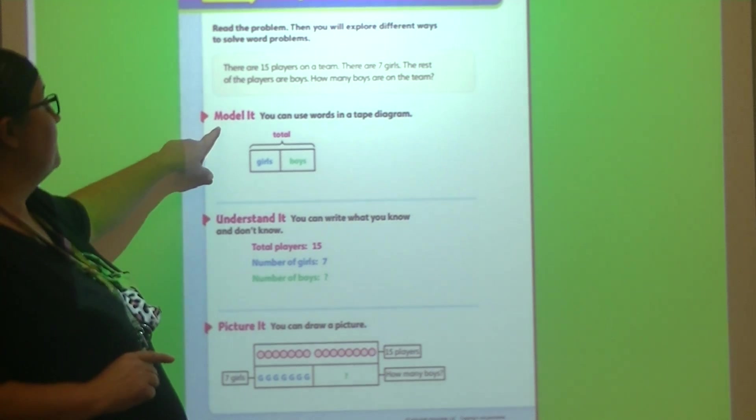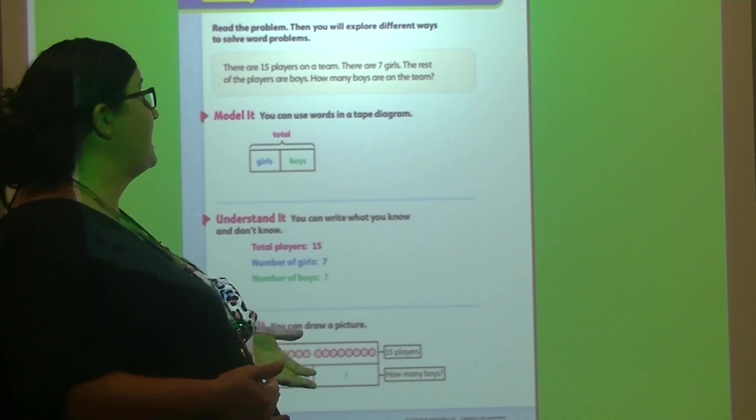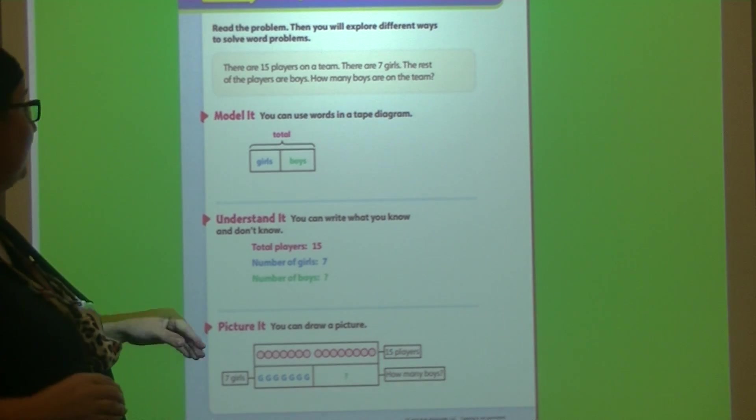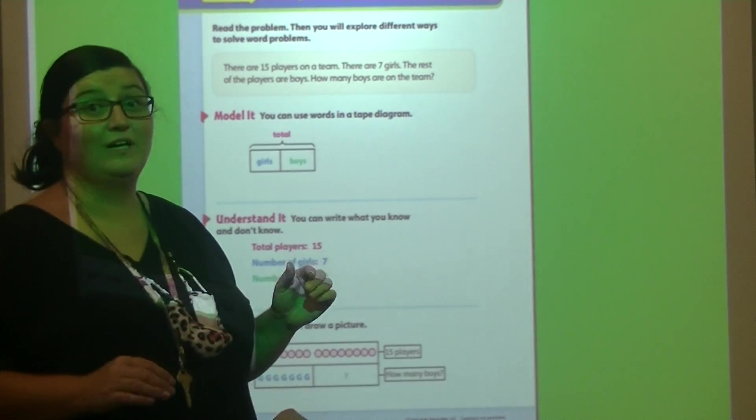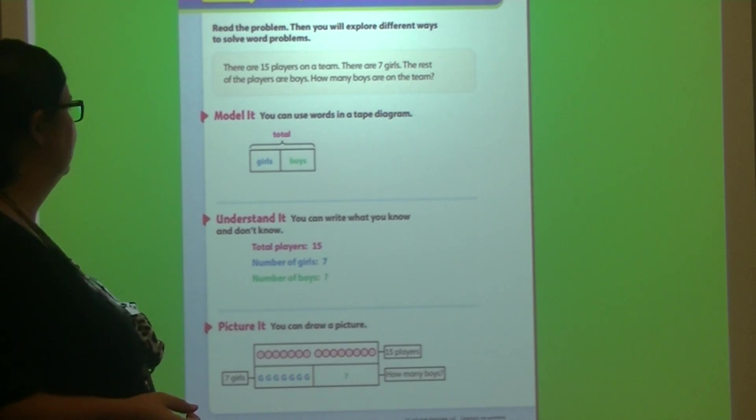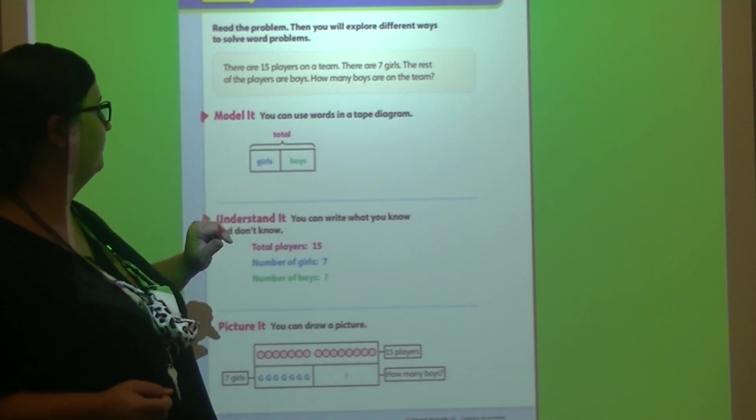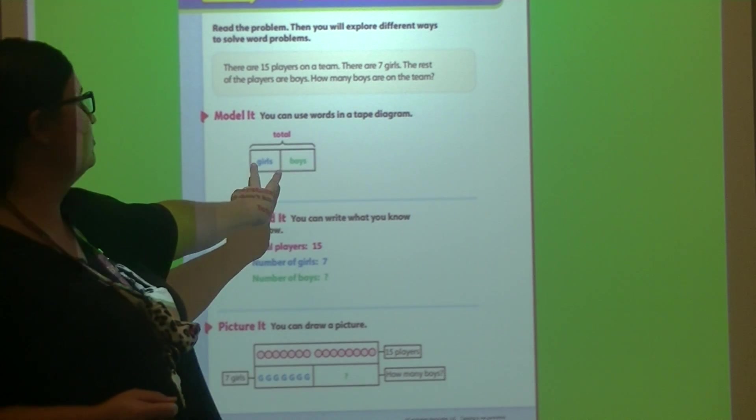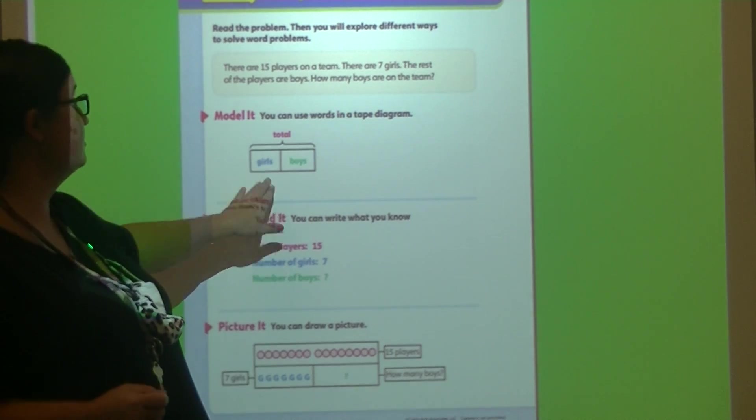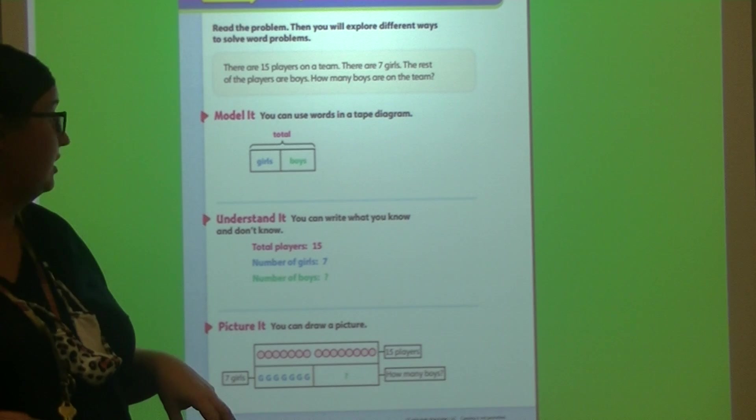Alright, model it. You watched a video talking about using a tape diagram. A tape diagram is something you can draw. It is a lot like the part, part, whole. The total number would go here, and then your two smaller numbers here. So we know girls plus boys would give us our total number.